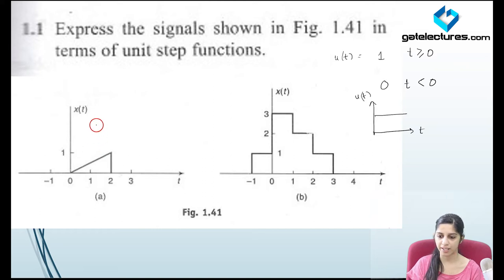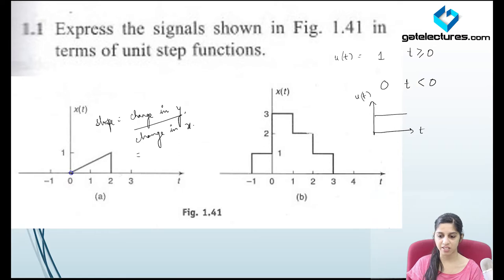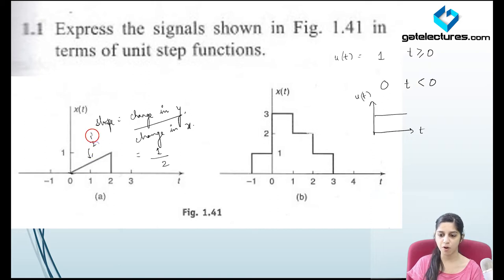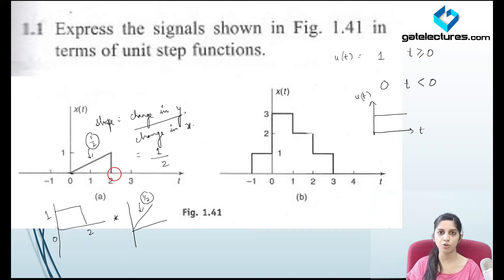Firstly, I am calculating the slope of the line. Slope is change in y upon change in x value. What is the change in y? Y changes from 0 to 1, so change in y is 1. What is change in x? Change in x is 2 units. So the slope of this line is going to be 1 by 2. I can represent this signal as multiplication of a unit pulse of value 1 which occurs between 0 and 2, and a line of slope 1 by 2. If I just multiply these two signals, I obtain the signal of the first part.